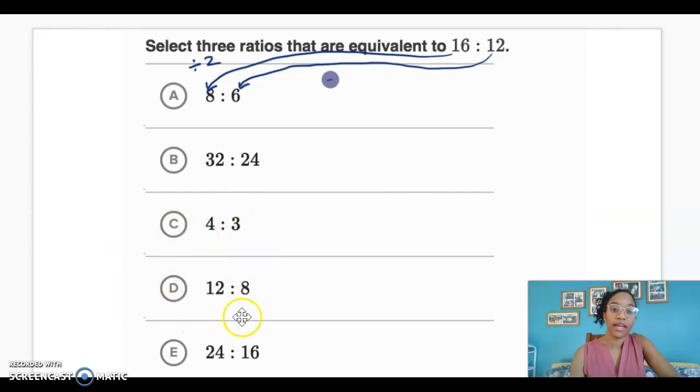Let's look at 4 to 3 and 12 to 8. 4 times what gives me 12? 4, 8, 12 times 3. 3 times 3 gives me 9. So D is not an equivalent ratio.